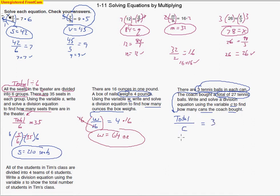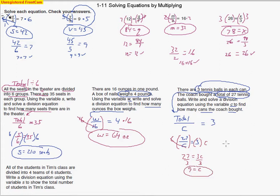So our equation is 27 over C equals 3. This is a two-step problem. We multiply both sides by C to cancel out the C's, giving us 27 equals 3C. Then we divide by 3 and get C equals 9 cans. Another way to think about it: 27 total balls divided by 3 balls per can gives us 9 cans altogether.